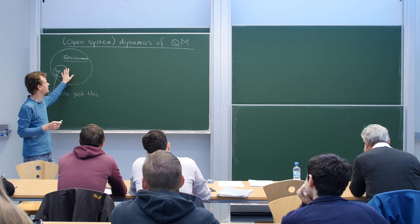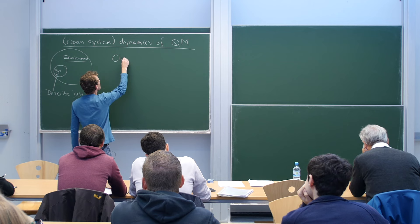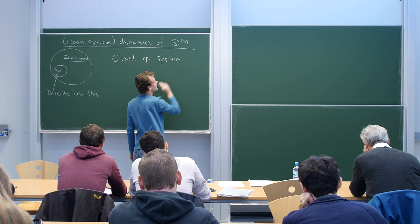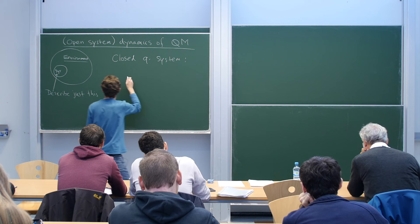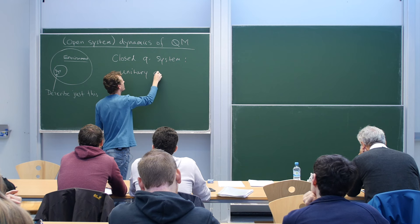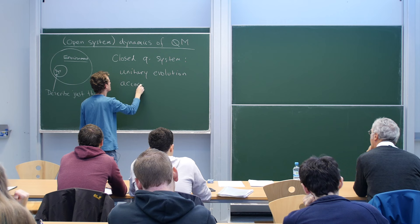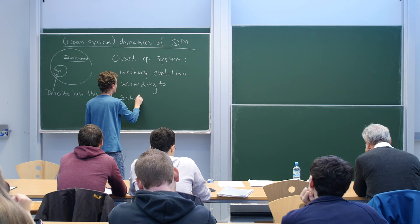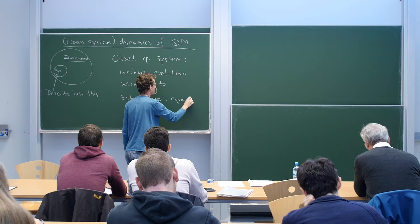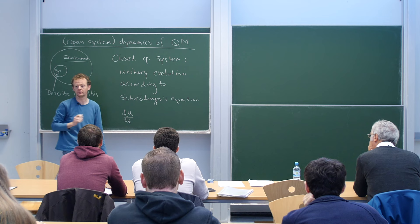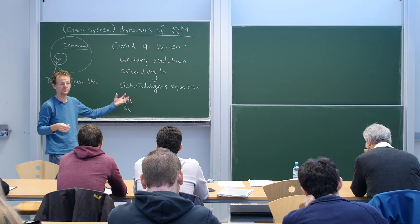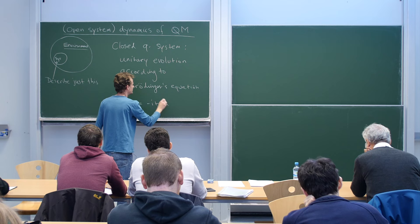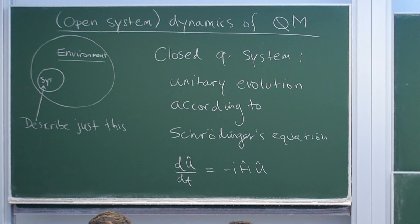According to the postulates of quantum mechanics, a closed quantum system undergoes unitary evolution according to Schrödinger's equation. The way we generate time evolution is to solve Schrödinger's equation for the propagator, or the unitary that implements the dynamics. This is standard quantum mechanics—this is how closed quantum systems evolve.